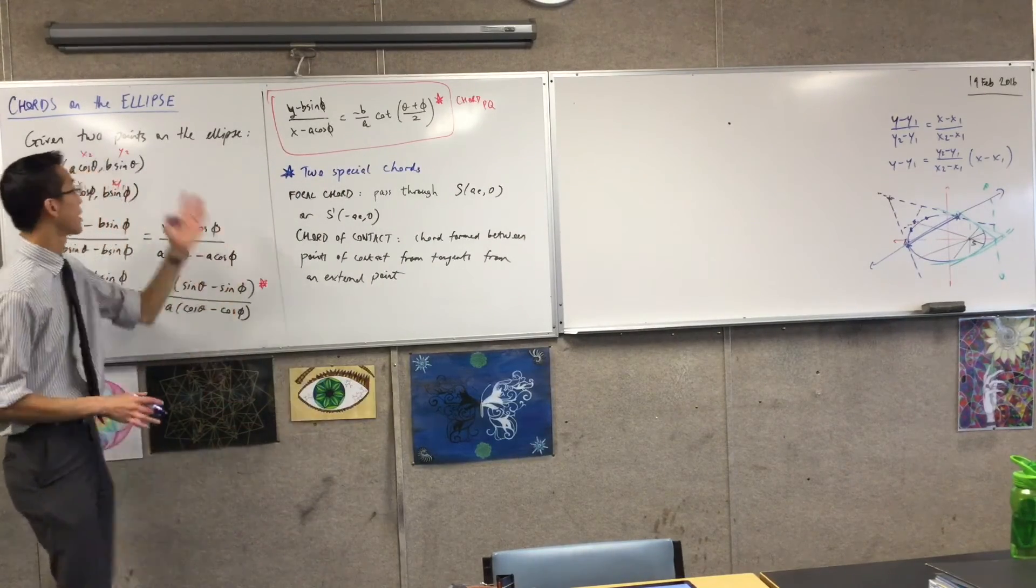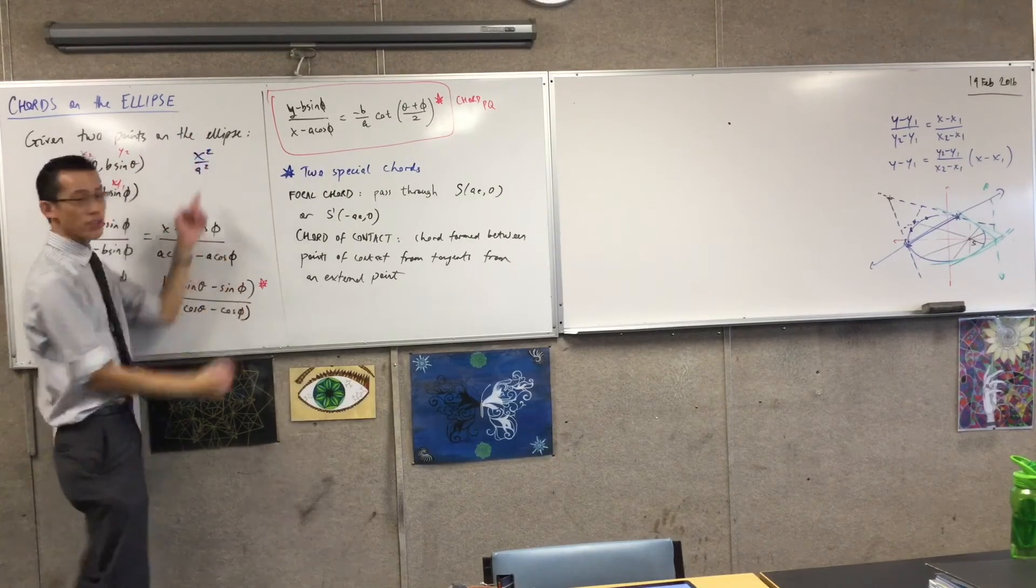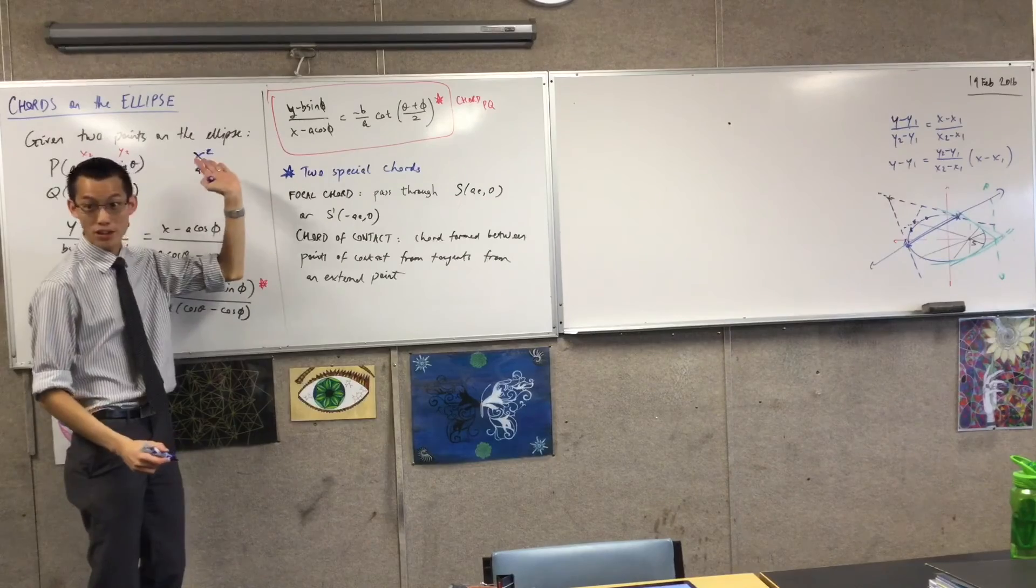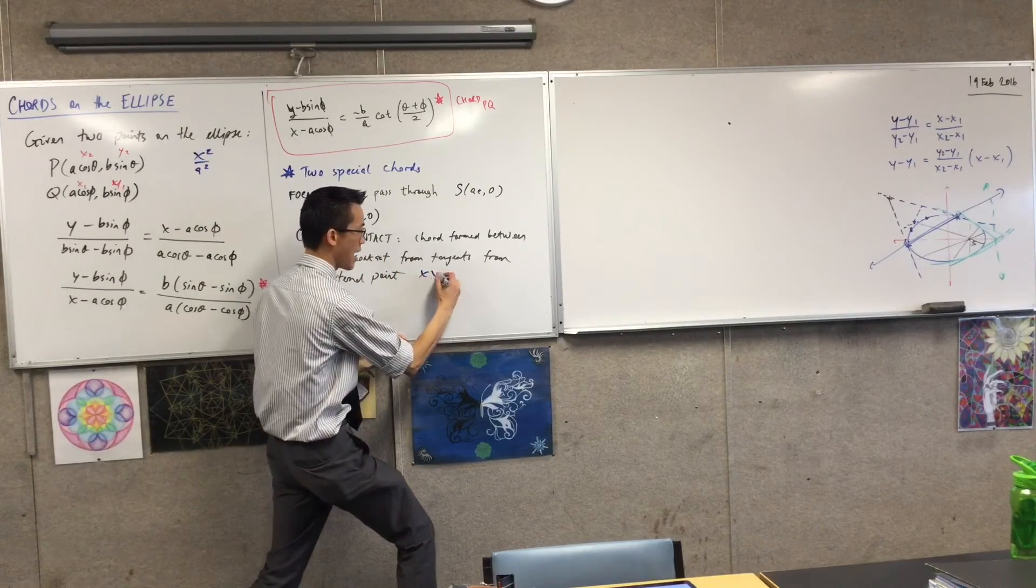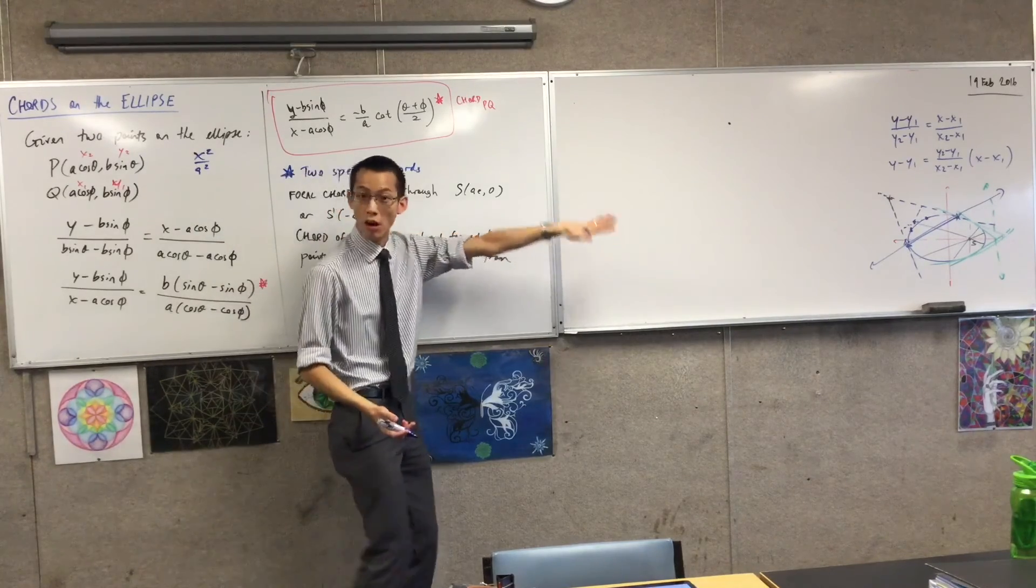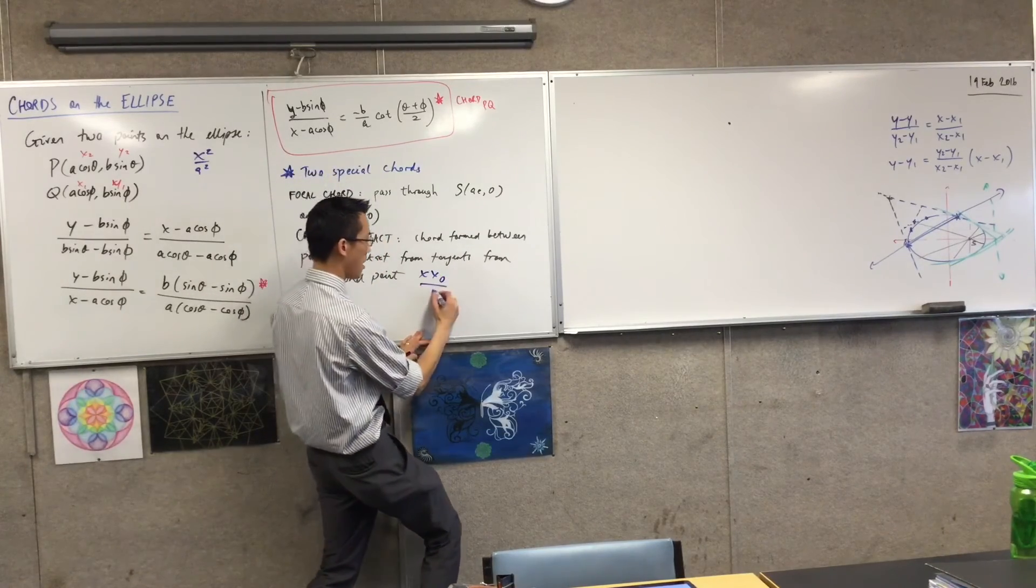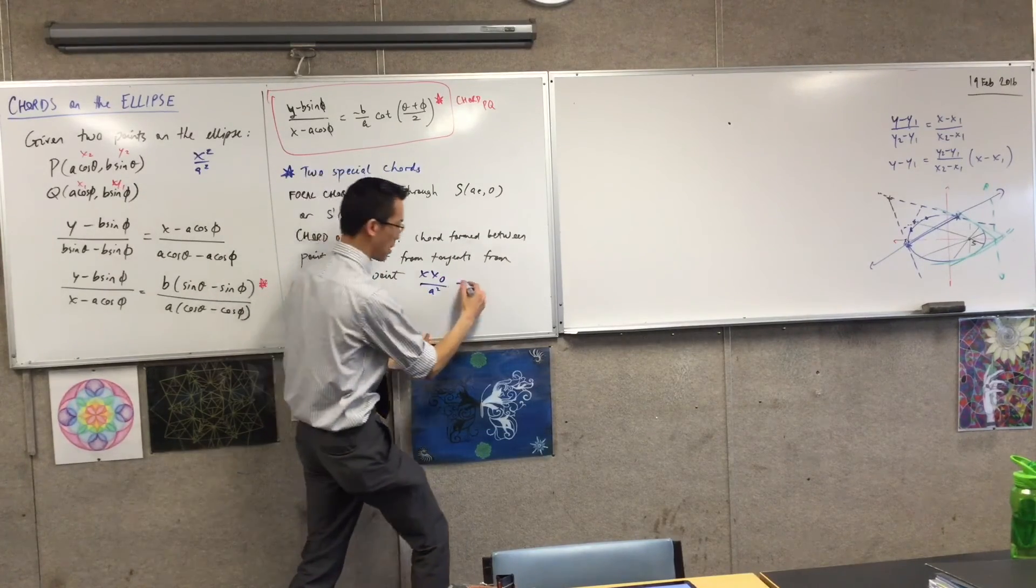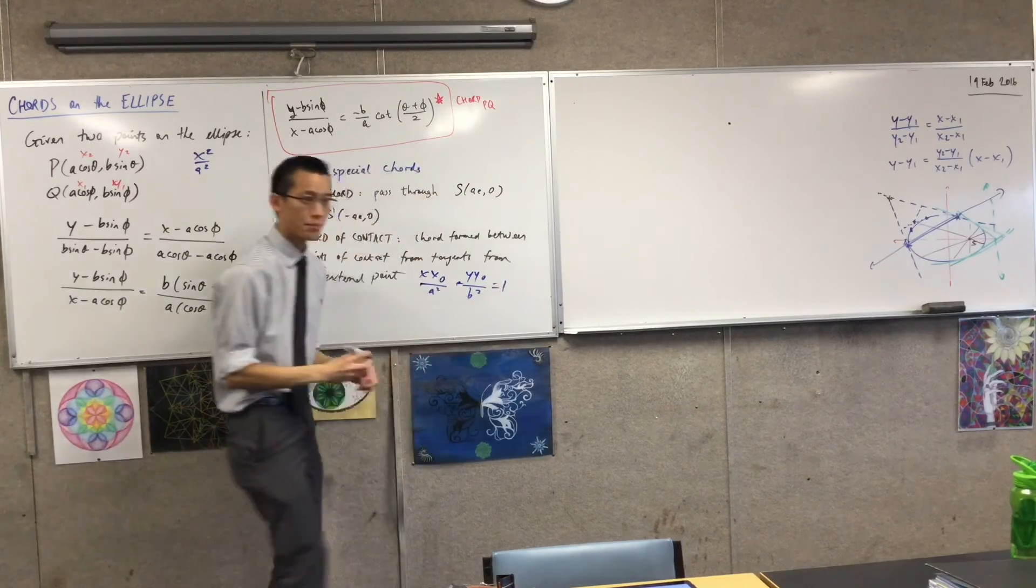Does anyone remember what the Cartesian equation for a tangent is? It's very simple, it's very much like the equation of an ellipse. Yeah, very good, so I usually have x squared, that's my equation of the ellipse. So for the tangent, I have x times x1, but as a convention, if I'm referring to a point that's off of the locus, I don't call it x1, I call it x0. So I've got x times x0 on a squared plus y times y0 on b squared equals 1.